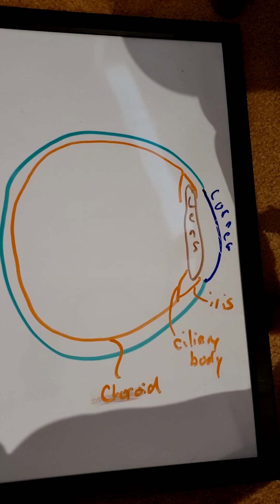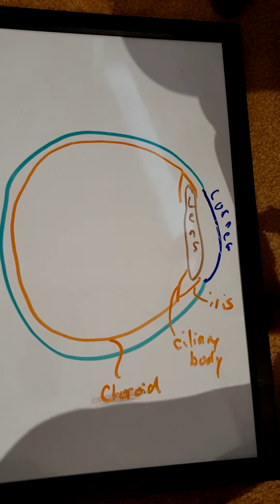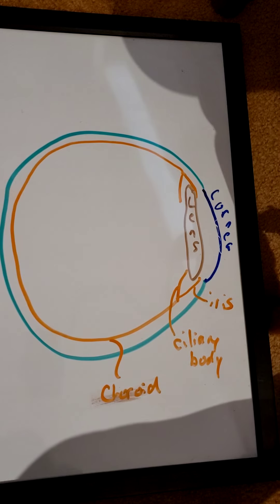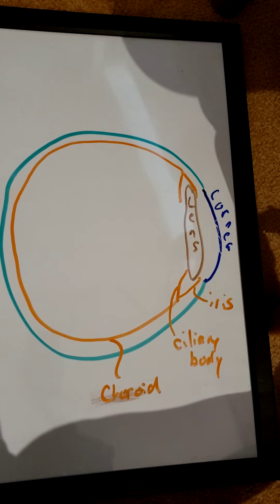The lens is attached to that ciliary body, and the ciliary body has little fibers that go down to the lens and pull or push on the lens to change the shape of the lens so that the light can be focused on the retina in the posterior part of the eye.